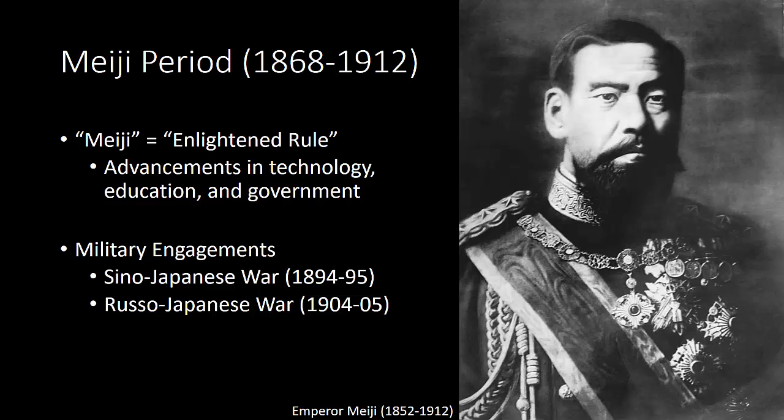The word Meiji itself means enlightened rule, and so during this period we see the assimilation of Western technologies and science. Telegraph and telephone lines are installed, railways are built, and Japan transforms itself into a modern industrial state.